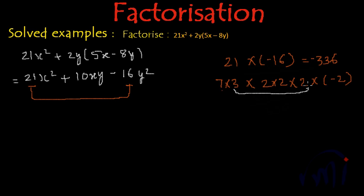12 twos are 24, and 7 multiplied by minus 2 gives us 7 twos are 14, minus 14. So 24 and minus 14 are the factors which will result in plus 10.